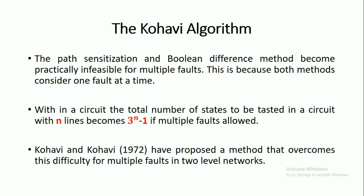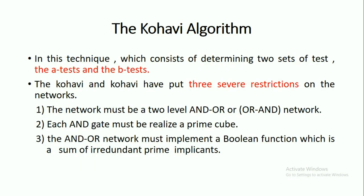To overcome this problem, Kohavi and Kohavi in the year 1972 proposed one method. This method overcomes the difficulty for multiple faults in two-level networks. For determining two tests — the A test and B test — Kohavi and Kohavi put three severe restrictions on the networks.